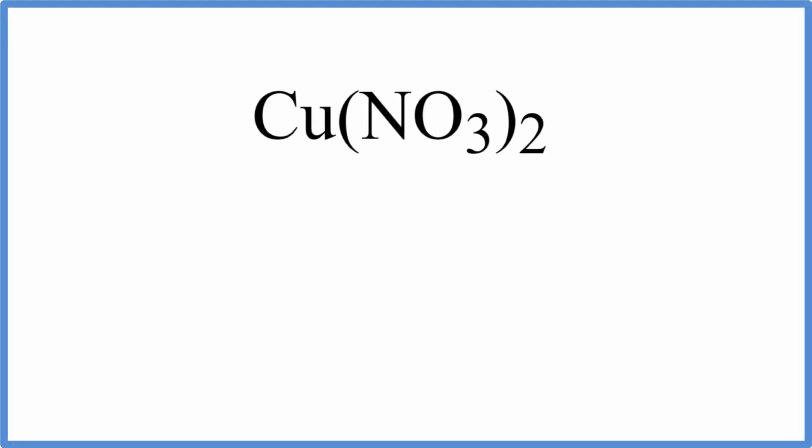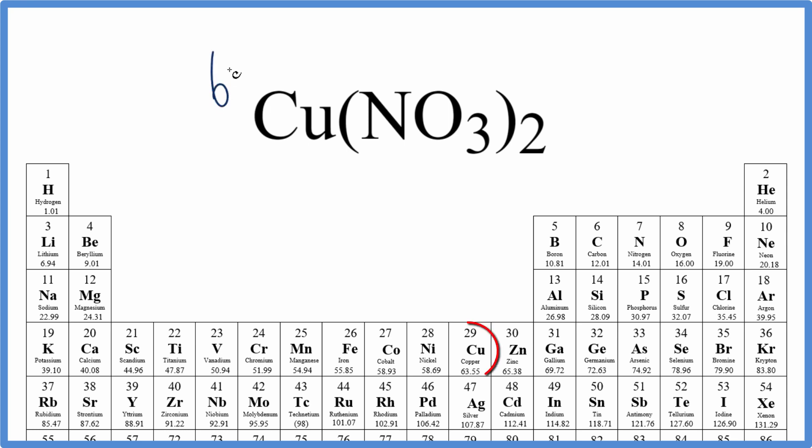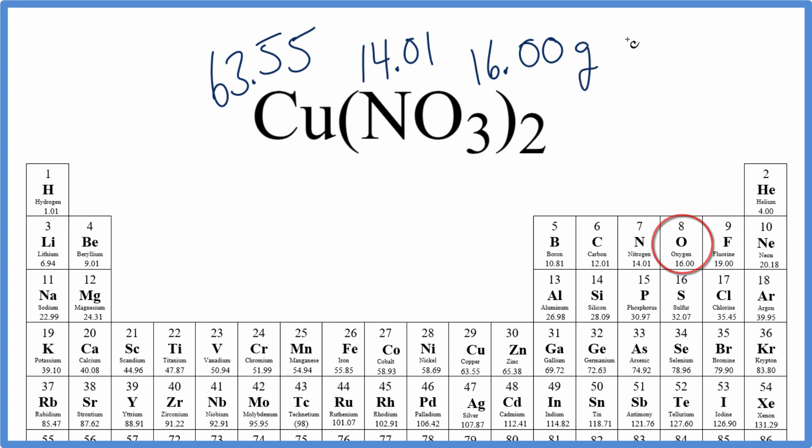To find the molar mass for copper(II) nitrate, we'll look on the periodic table. Copper is 63.55 grams per mole, nitrogen is 14.01, and oxygen is 16.00 grams per mole.